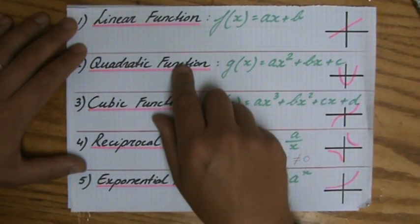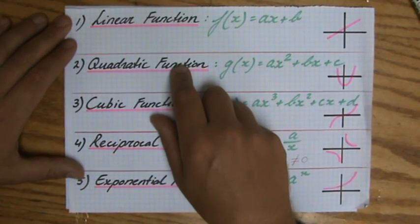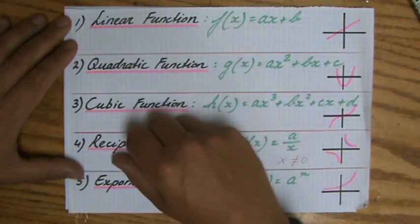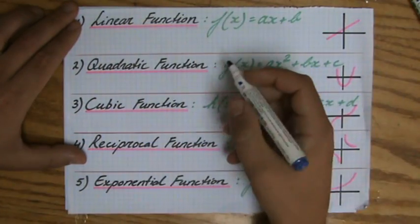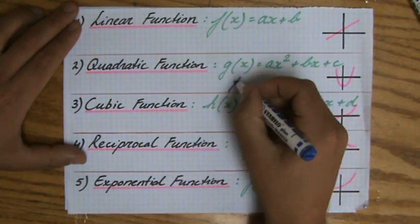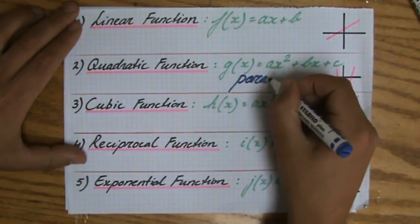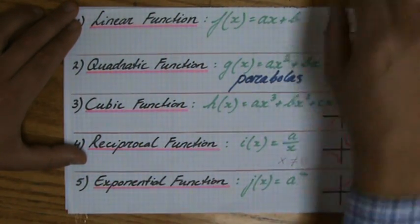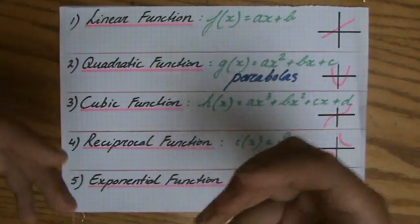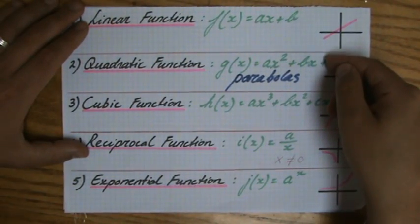For a quadratic function, you are never going to get a line. You're going to get something beautiful. You're going to get what we call a parabola. A parabola is only for a quadratic function. A parabola is a symmetrical function where you have some sort of line of symmetry in the middle.